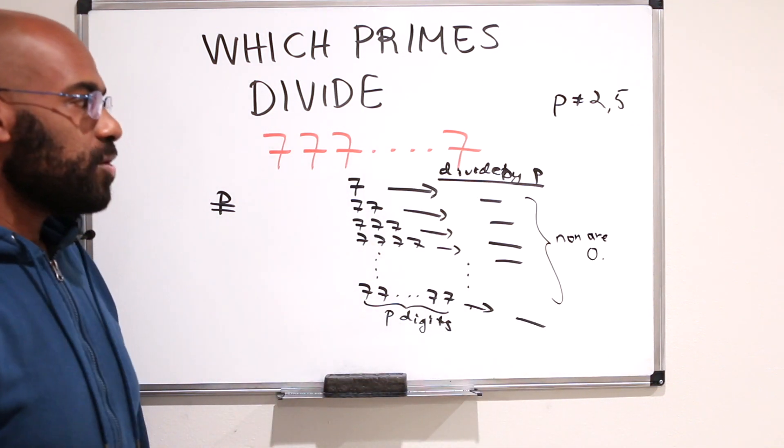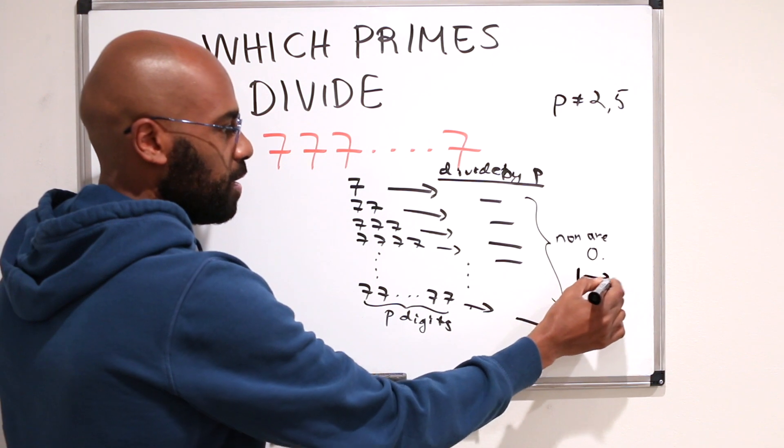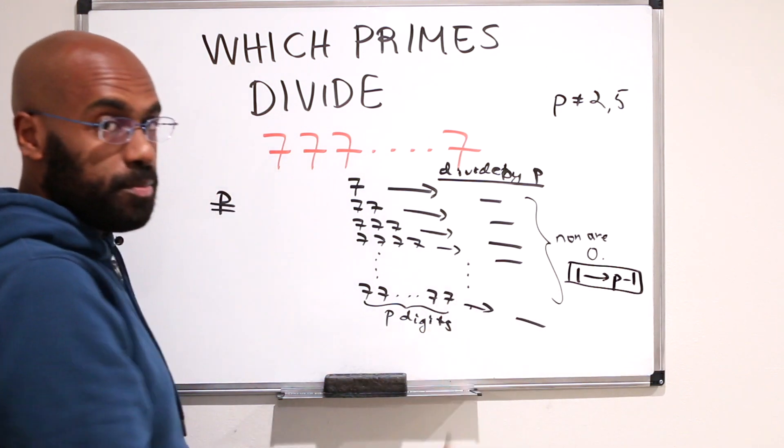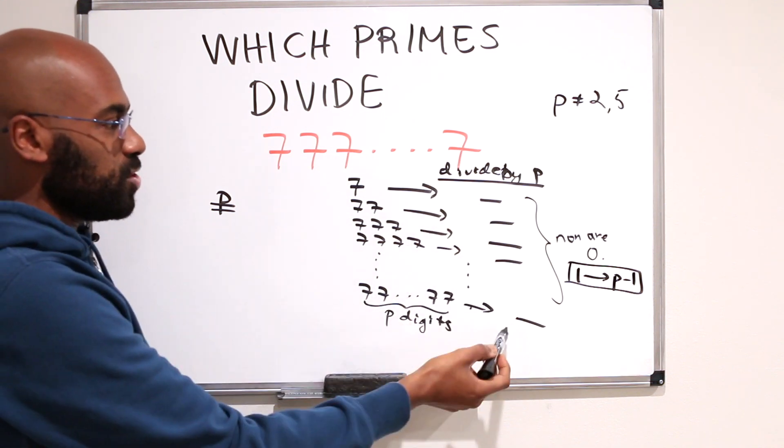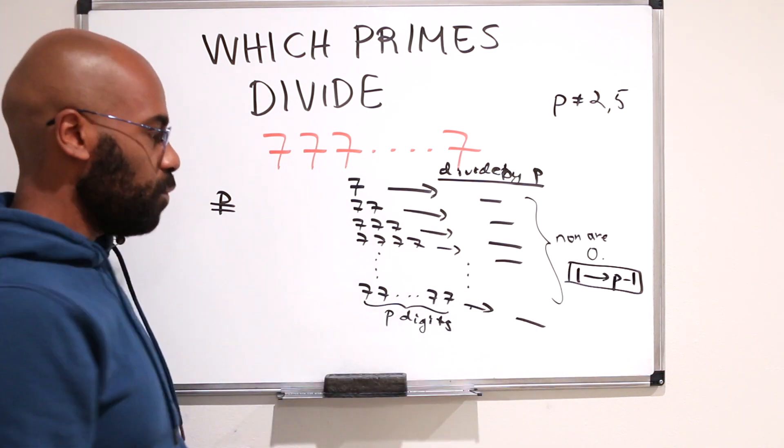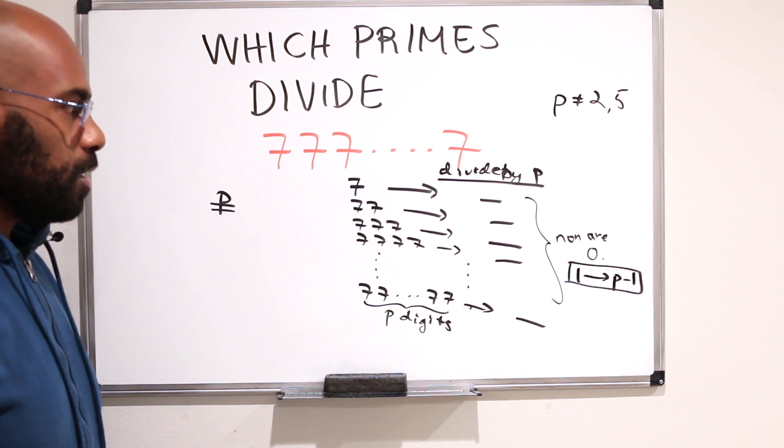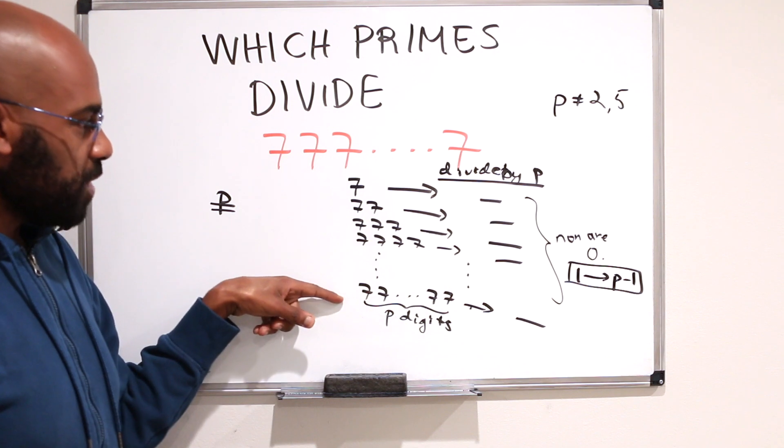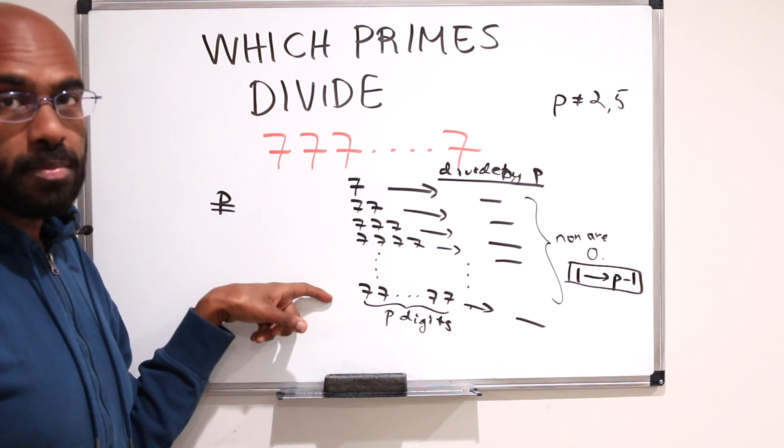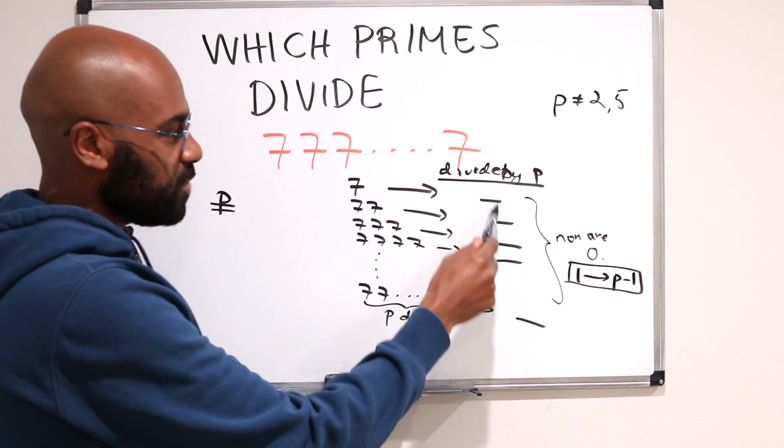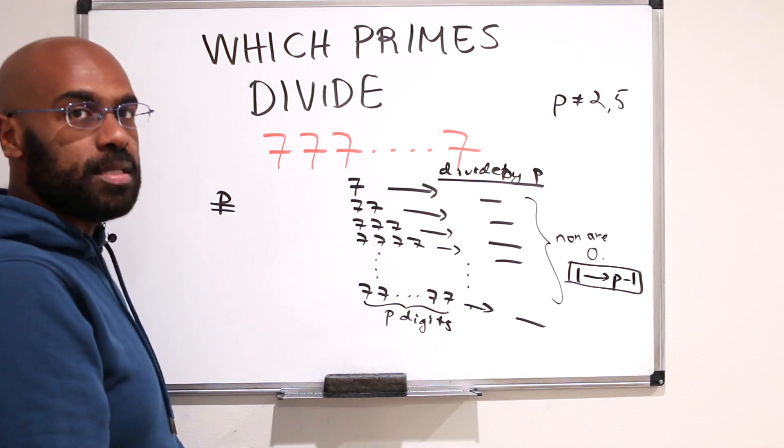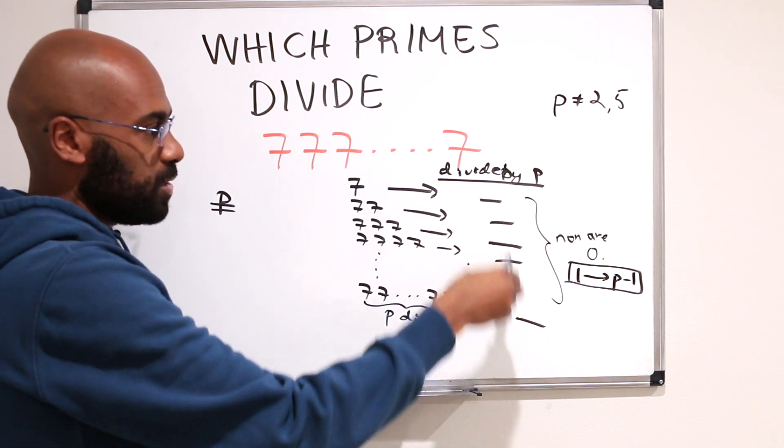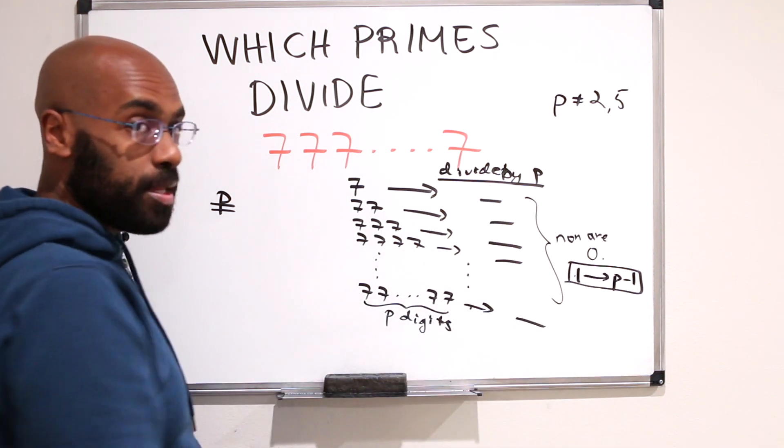So these remainders are all strictly between 1 and p minus 1. Or actually, 1 and p minus 1 are options, but these remainders are definitely numbers in the set between 1 and p minus 1. Okay, so there's p minus 1 numbers here, and there's p remainders in total because we started with p different numbers. So that means one of these remainders has to repeat at least once. You can't have p numbers here that are all distinct if they're numbers between 1 and p minus 1.